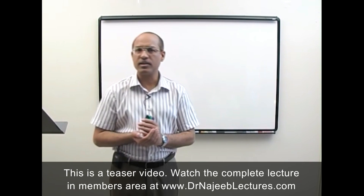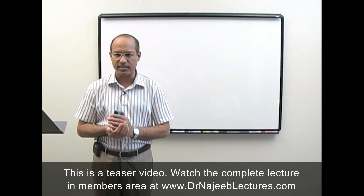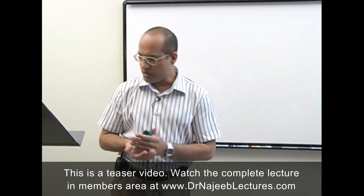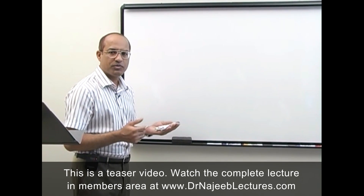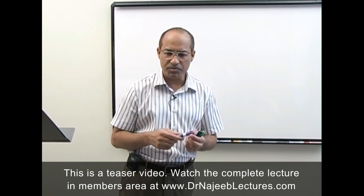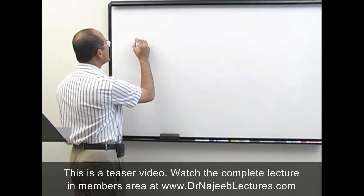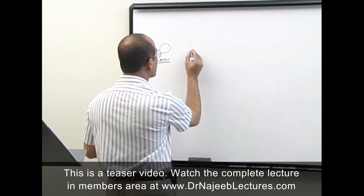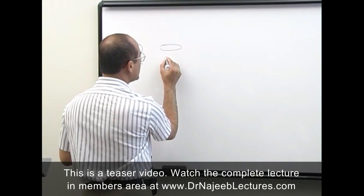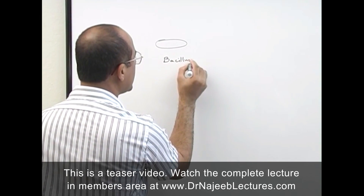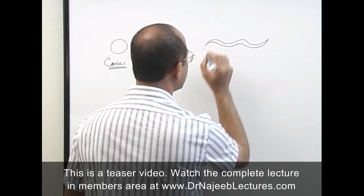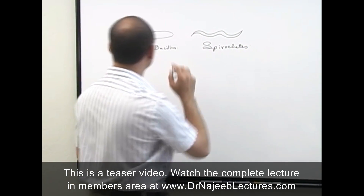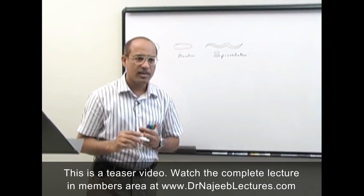Today in microbiology we are starting with the concepts related with the structure of bacteria. First of all, a few words about the shape and size. Everyone knows that bacteria primarily have three types of shapes. When bacteria are circular, we call them cocci. If bacteria are rod-shaped, we call them rods or bacillus. And if bacteria are spiral-shaped, we call them spirochetes.